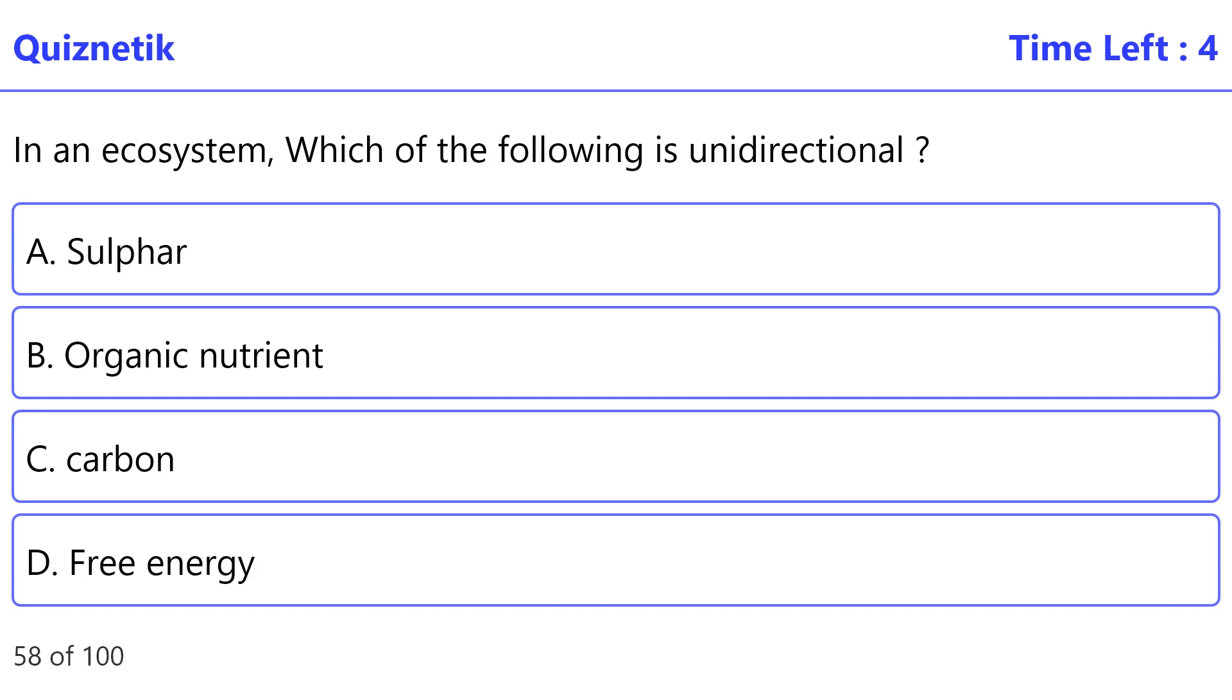In an ecosystem, which of the following is unidirectional? The correct option is D, free energy.